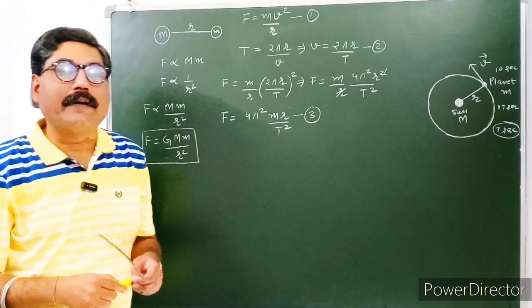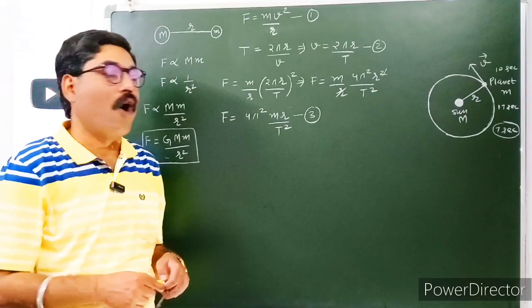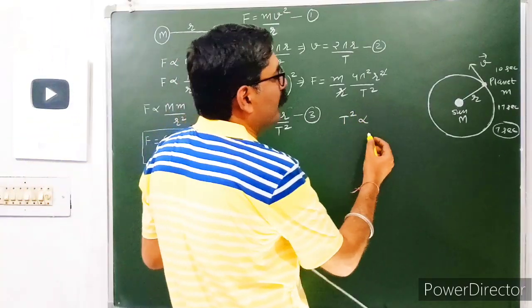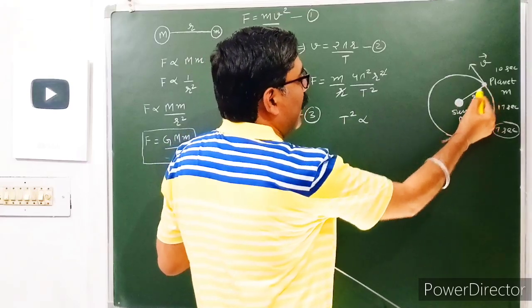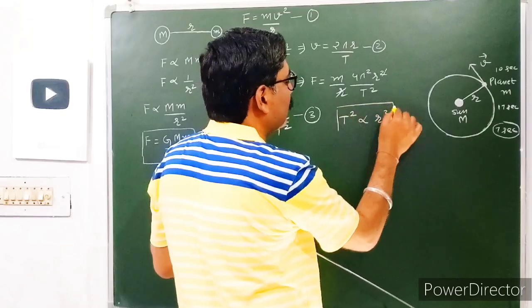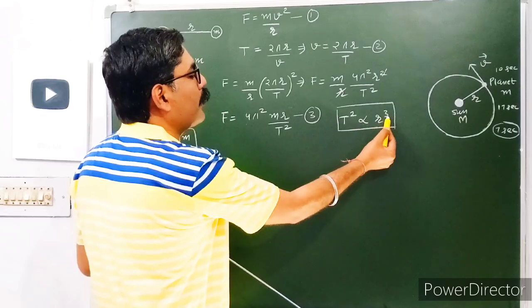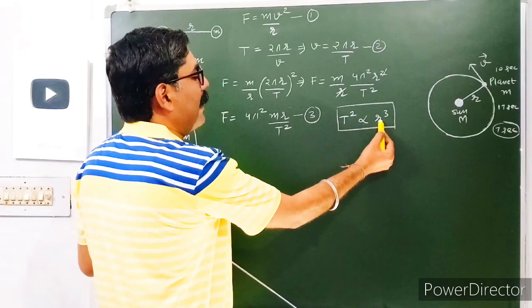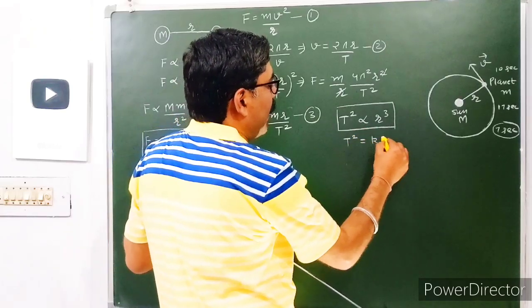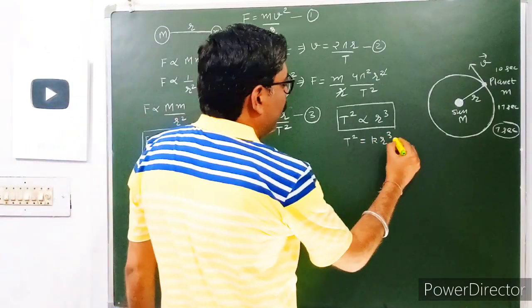Now we will use Kepler's law of planetary motion — specifically Kepler's third law. Kepler's third law states that the square of the time period of revolution is directly proportional to the cube of the distance between the planet and the sun, that is r³. When we remove the proportionality sign, we get a constant k, the constant of proportionality: T² = kr³. Let us mark this as equation number 4.